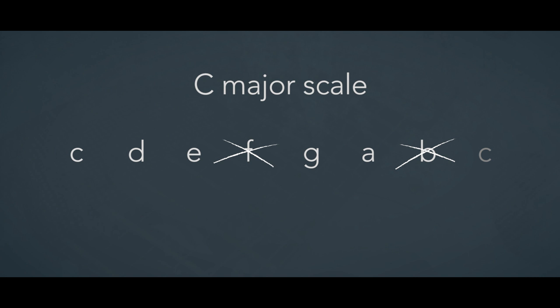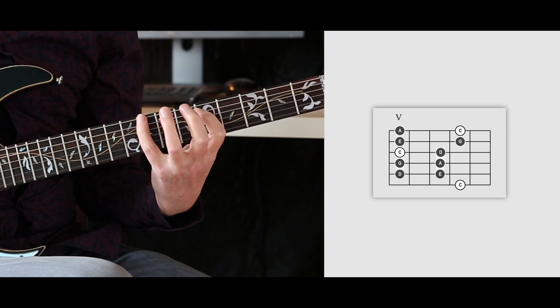Now to turn the C major diatonic scale into a C major pentatonic scale, we just have to ditch the fourth and seventh notes, leaving us with these five notes: C, D, E, G, and A. And it sounds like this.